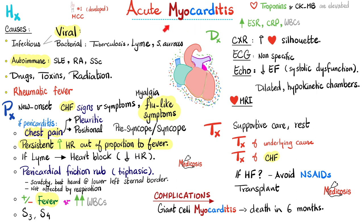Signs and symptoms: congestive heart failure presentation. Since it's acute myocarditis and usually the cause is viral, we have flu-like symptoms, muscle aches, fatigue, fever, leukocytosis, maybe S3 or S4 heart sounds. Don't forget the pericardial friction rub, especially if pericarditis accompanies it, and chest pain if pericarditis is present. There is persistent tachycardia out of proportion to the fever. However, if the cause of the myocarditis is Lyme disease, then we expect heart block with bradycardia, not tachycardia. Because of the myocardial muscle injury, I can get elevated serum troponins and CK-MB.